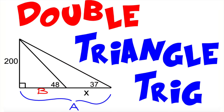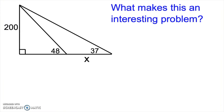Hey everyone, I'm Mr. Ray and today we're going to talk about double triangle trigonometry. What I mean by double triangle trigonometry is that we have a picture or a setup where there are multiple triangles and we're going to end up choosing two of them to work with. We're not going to employ anything new in this video — we're just going to be looking at more advanced applications of what we've already done.